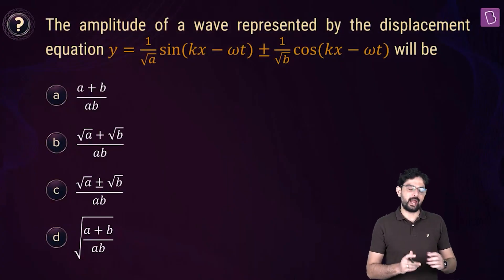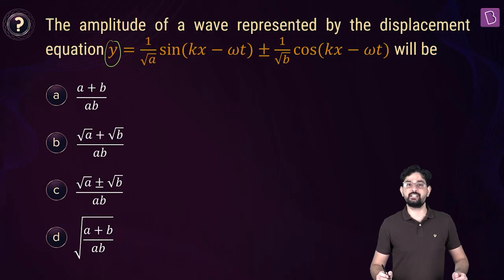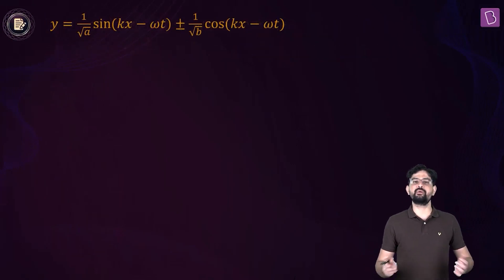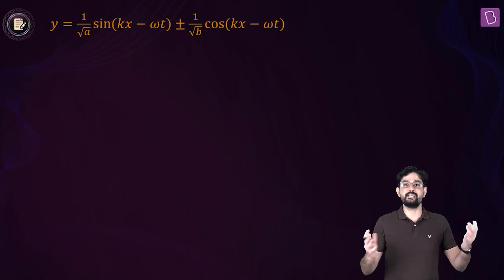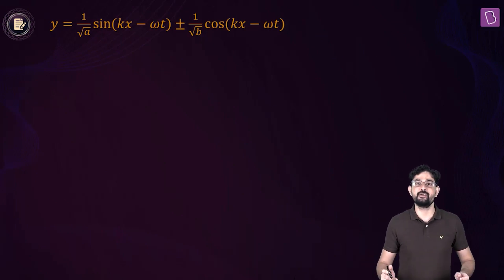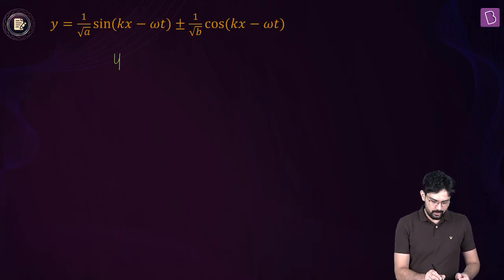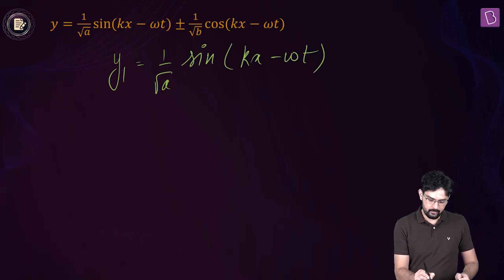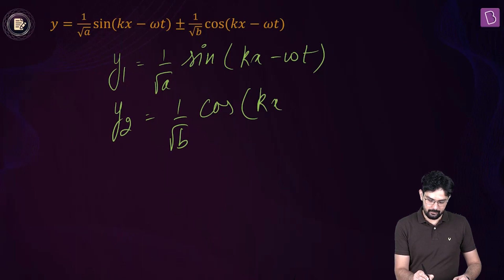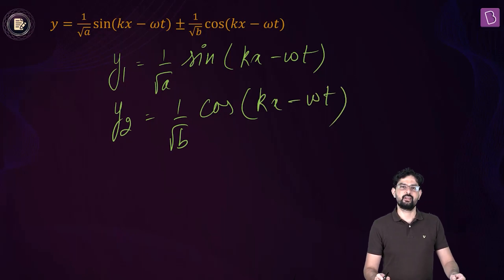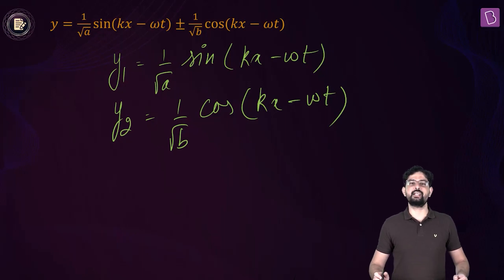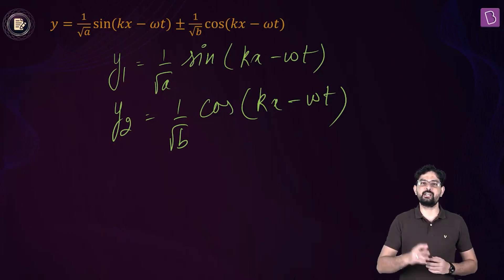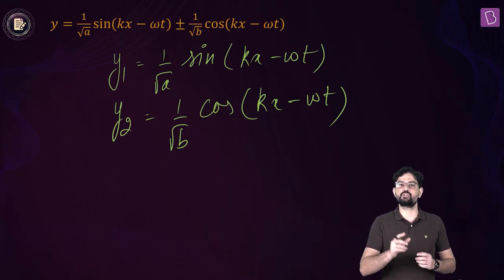Now, looking at the net displacement y of the resultant wave, it is a combination of two waves superimposing to give the resultant wave. One of these waves is 1 upon root a times sin(kx minus omega t), and the other one is 1 upon root b times cos(kx minus omega t). We have to find the resultant amplitude, given by the square root of A1 squared plus A2 squared plus 2 A1 A2 cos of delta phi.